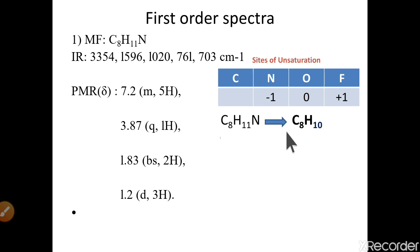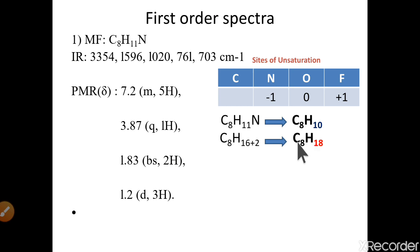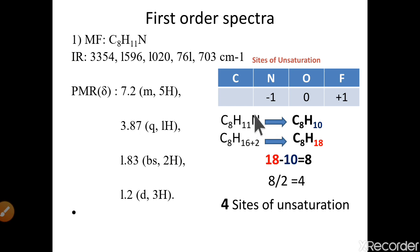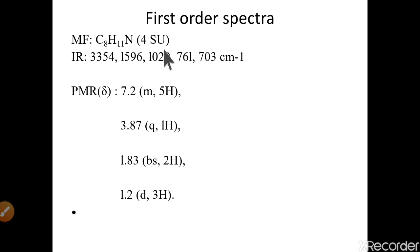Now let's calculate the degrees of unsaturation. The general formula for a saturated hydrocarbon with 8 carbons is CnH(2n+2), so C8H18. We have C8H10, so 18 minus 10 equals 8 hydrogens difference. Since two hydrogens account for one degree of unsaturation, 8 divided by 2 equals 4. We have four degrees of unsaturation.